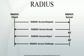The user or machine sends a request to a Remote Access Server to gain access to a particular network resource using access credentials. The credentials are passed to the RAS device via the Link Layer protocol, e.g., Point-to-Point protocol in the case of many dial-up or DSL providers, or posted in an HTTPS secure web form. In turn, the RAS sends a RADIUS access request message to the RADIUS server, requesting authorization to grant access via the RADIUS protocol. This request includes access credentials, typically in the form of username and password or security certificate provided by the user. Additionally, the request may contain other information which the RAS knows about the user, such as its network address or phone number, and information regarding the user's physical point of attachment to the RAS.